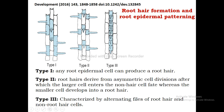The third type is characterized by alternating files of root hair cells. A file containing cells with root hairs is flanked by files of hairless epidermal cells. This can appear as one file with root hairs alternating with one file of hairless cells, or one file with root hairs flanked by two alternating files of hairless epidermal cells. In grasses, we see alternating files of root hair cells and hairless cells.